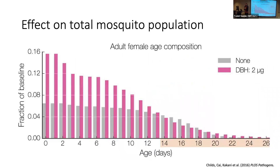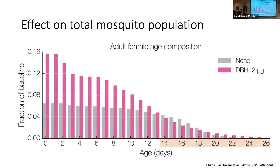However, DBH really changes the age composition of the population. We see many more younger mosquitoes and slightly fewer older mosquitoes. Highlighted are the days we'd expect mosquitoes to be potentially transmitting malaria, since there's a relatively long incubation period within the mosquito. So while we see a large increase in total projected population, it's much younger mosquitoes that we're actually seeing.